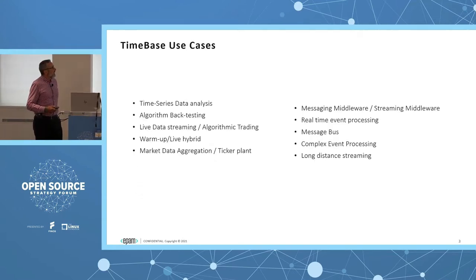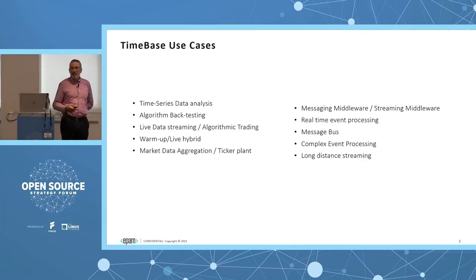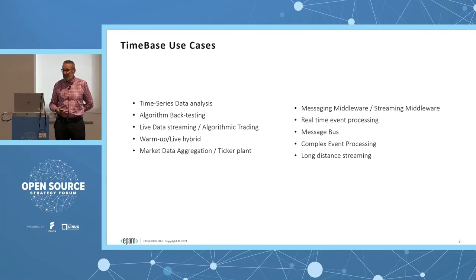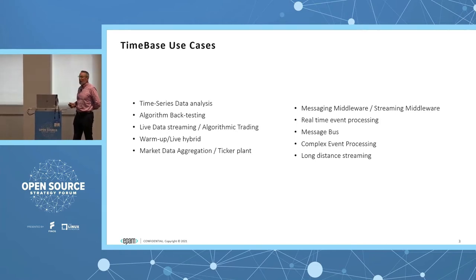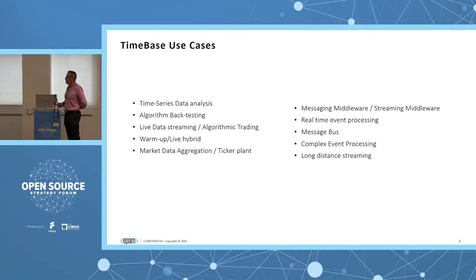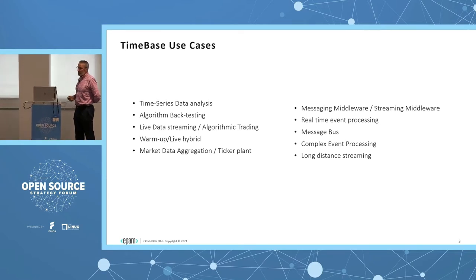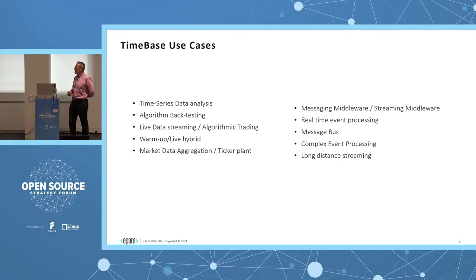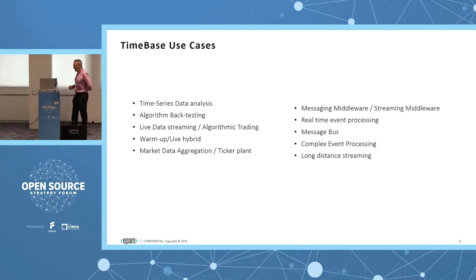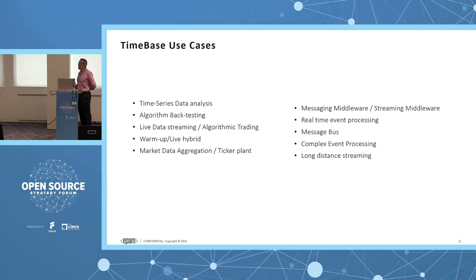Going into that a little bit more detail: for those of you familiar with backtesting, backtesting by definition is looking at historical data — the clue's in the name. But for algorithmic trading, that is real time. That coexistence of historical data and real-time data is certainly a very important feature. It is used for what used to be called complex event processing — the whole idea of real-time event processing where you define the events is a very real use case we use Timebase for.